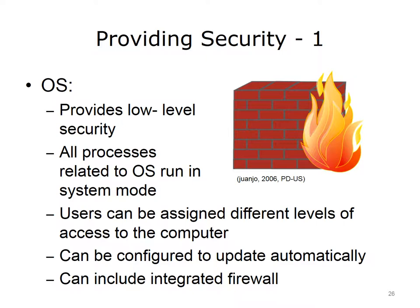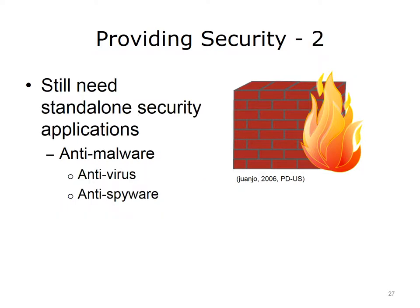Finally, the OS provides low-level security. It runs all processes related to the OS in system mode, meaning users cannot access the processes. It can provide user accounts and access rights to protect access to the computer and the file system. Also, current operating systems can be configured to update automatically, which means that any security holes can be patched quickly. In addition, current operating systems can include integrated firewalls, which can protect the computer from unwanted network access. Regardless of these security features, users still need to install security applications, which provide the most thorough and up-to-date protections against malware, including viruses and spyware.